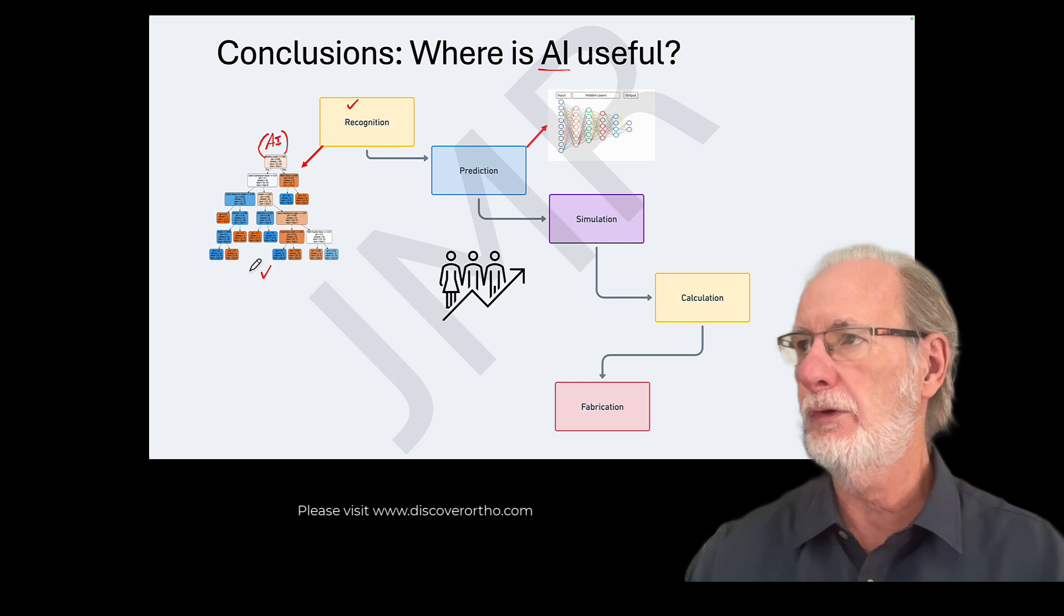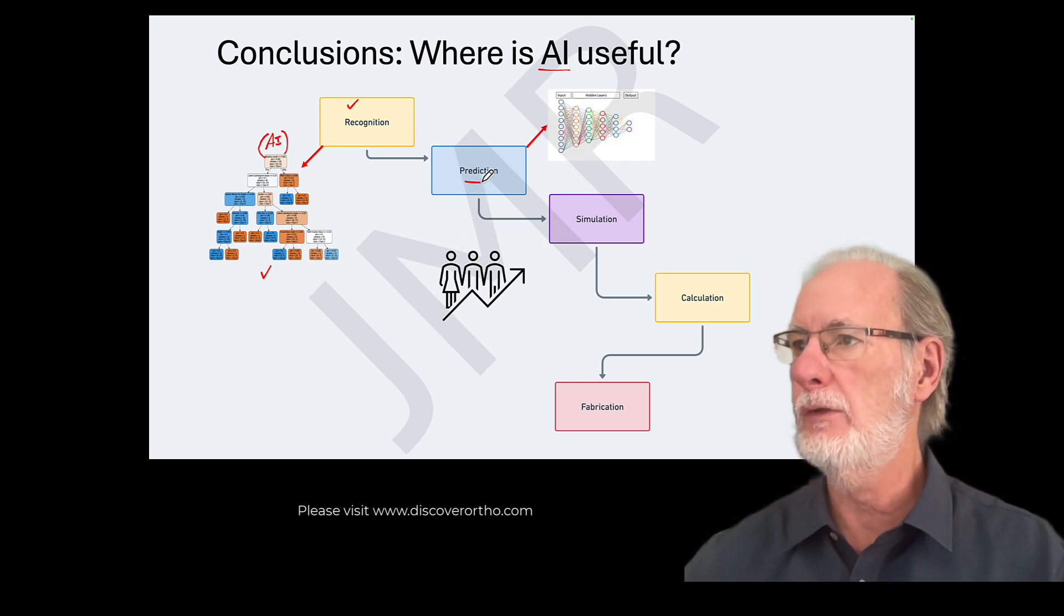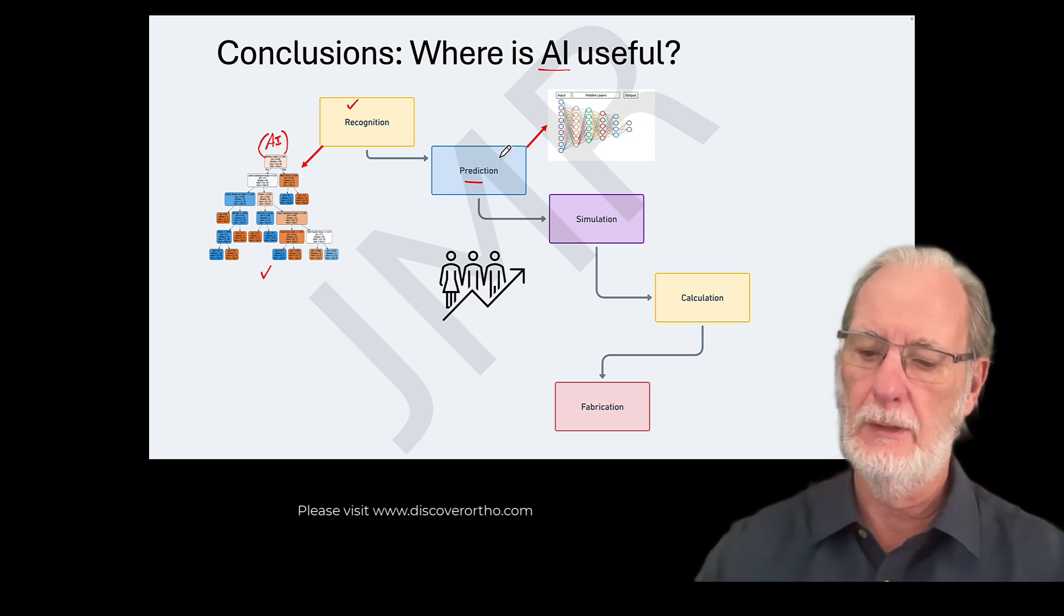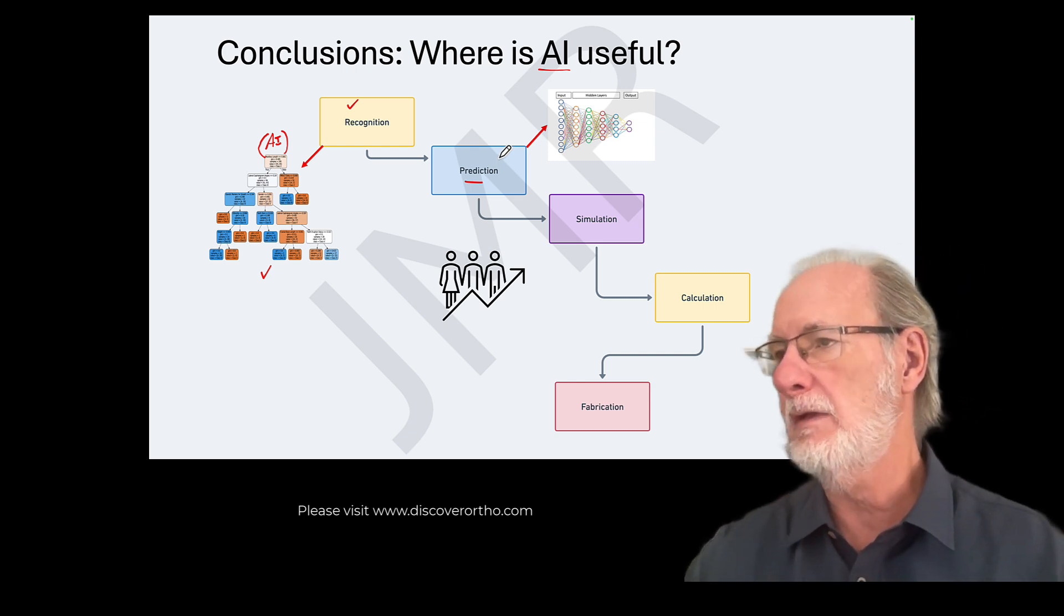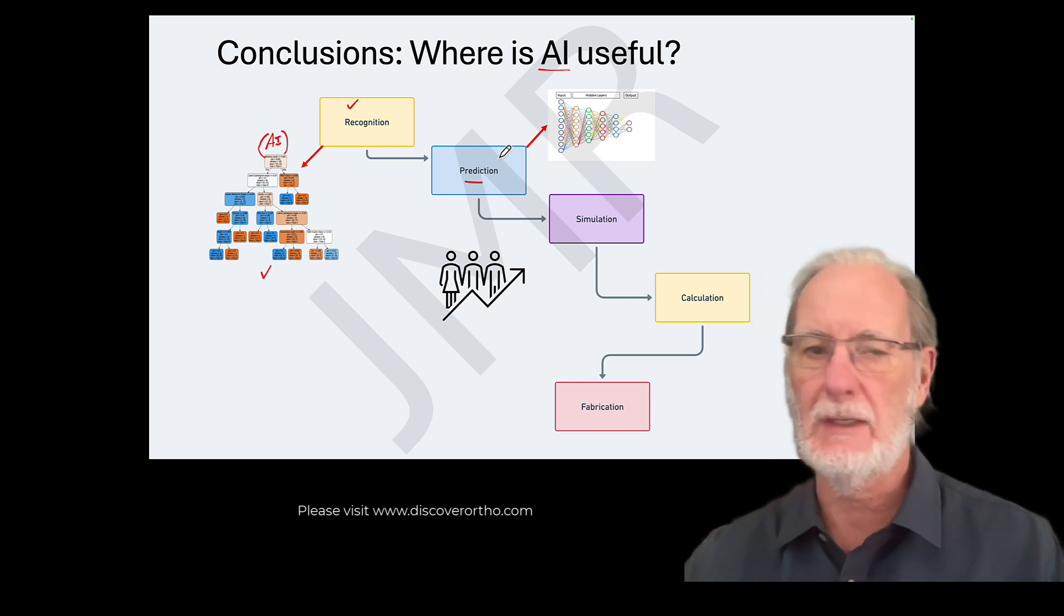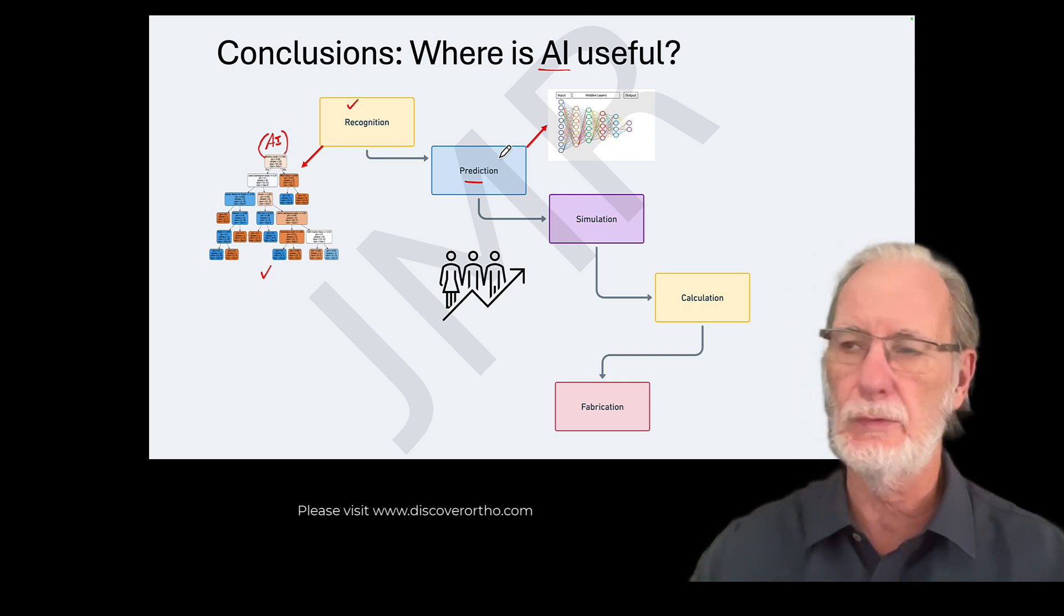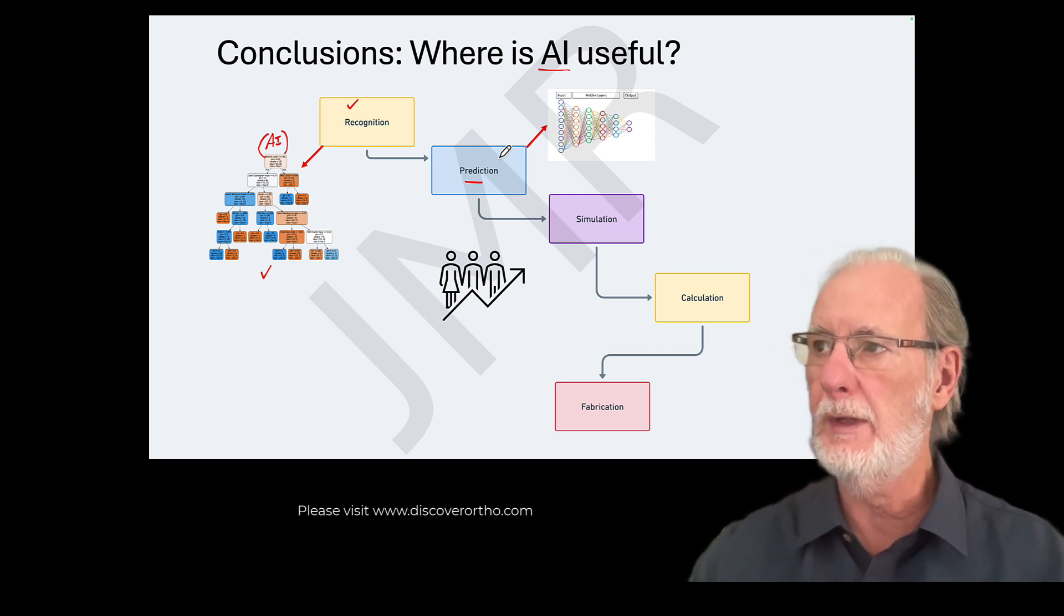As we said before, you can use neural networks for prediction, either for growth, remember, and for anything you want, many extractions, non-extraction cases. You can predict all sorts of things. So we use neural networks for that.